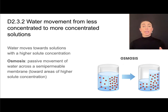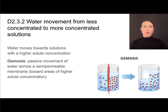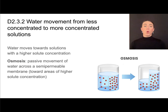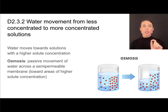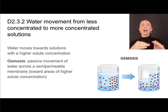If we have two solutions that have different concentrations and they are separated by a semi-permeable membrane that does not allow that solute to cross, then osmosis will take place. Osmosis is the passive movement of water across the semi-permeable membrane towards areas of higher concentration. Water always follows the higher solute concentration.